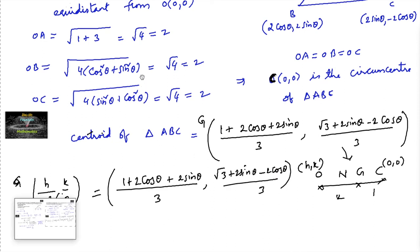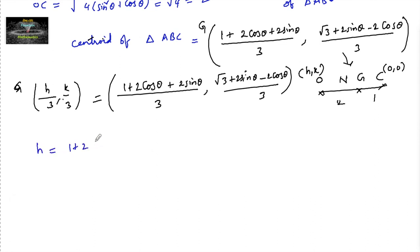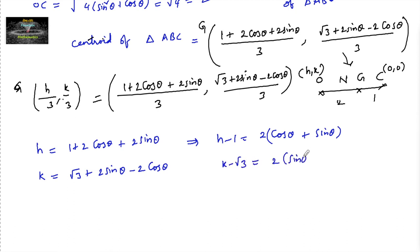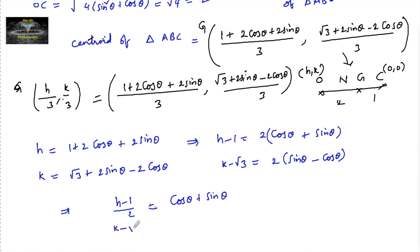This gives H equals 1 plus 2 cos theta plus 2 sin theta, and K equals root 3 plus 2 sin theta minus 2 cos theta. Rearranging: (H minus 1) divided by 2 equals cos theta plus sin theta (equation 1), and (K minus root 3) divided by 2 equals sin theta minus cos theta (equation 2).